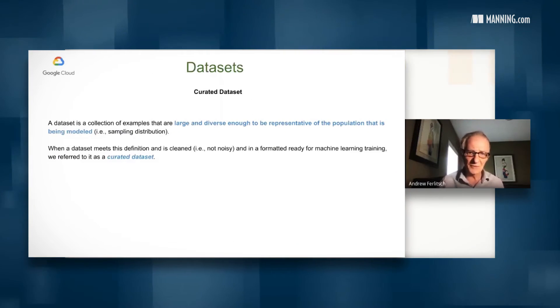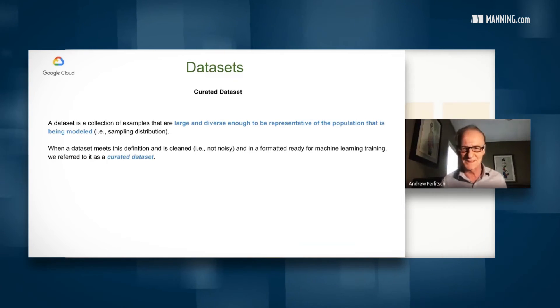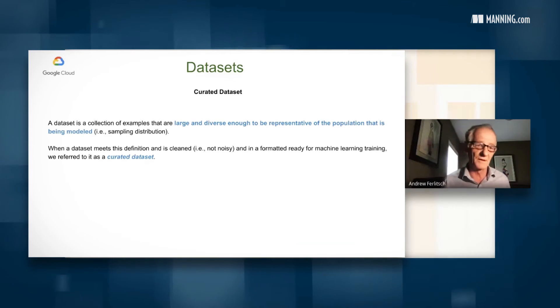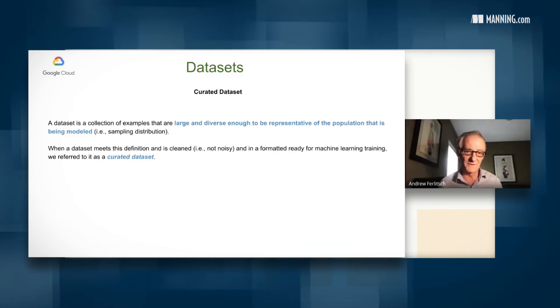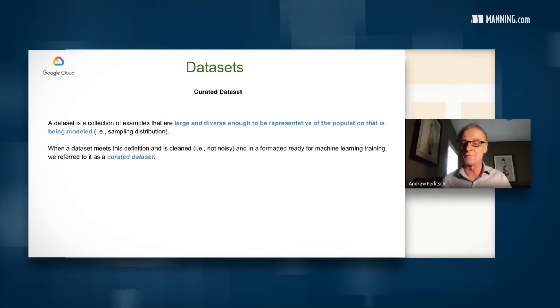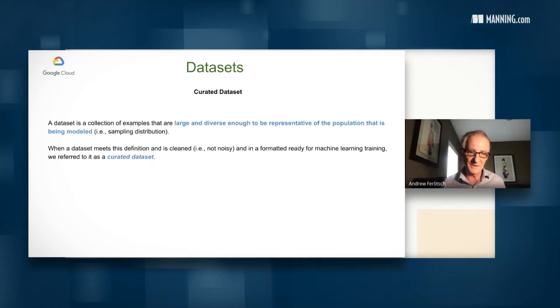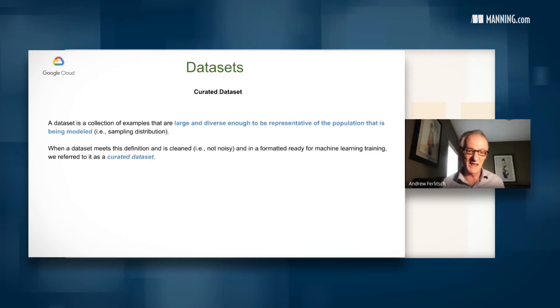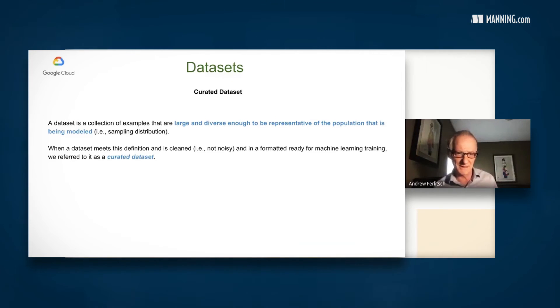So let's move into now data sets. So I'm going to start you off with the concept of a curated data set. Think of it as something that's essentially perfect. So curated data sets are collection examples that are very large and diverse enough to be representative of the population that we're going to model. And the data set meets this definition and is clean, has no noise, and is format ready for machine learning. We refer to those as curated data sets, and those are usually the data sets that we use for academic and educational purposes.